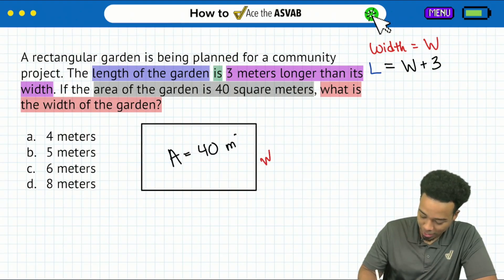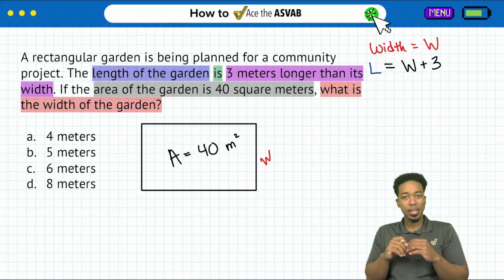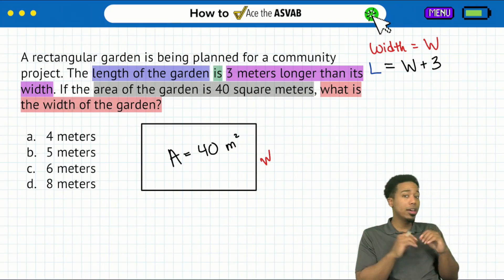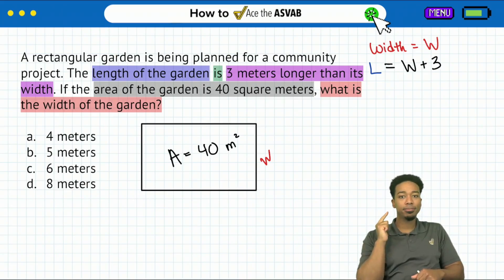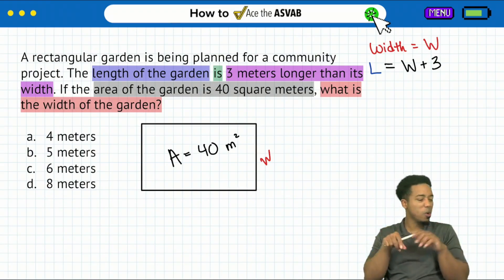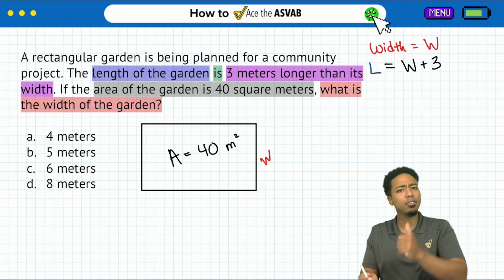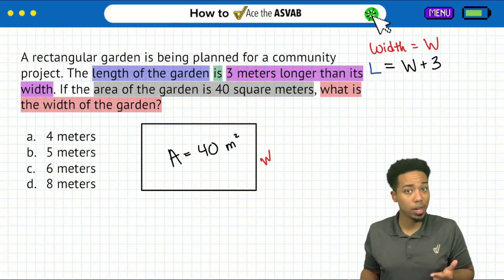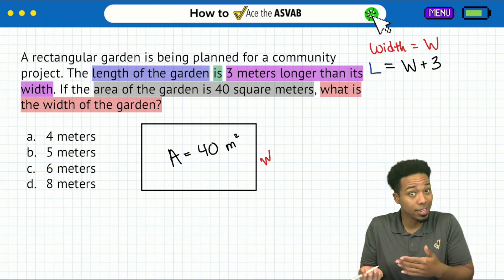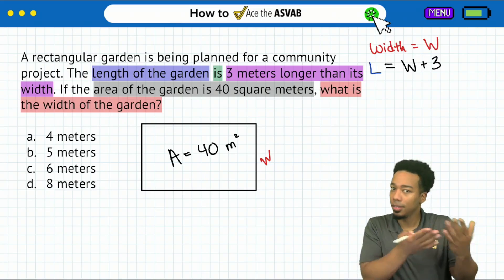So the area of the garden is 40 square meters. So here's how we're going to go ahead and put this all together. If we didn't have all these variables and all we read was we have a rectangle, we have the area, and we're looking for the width. You tell me in a regular word problem, what might we want to do?